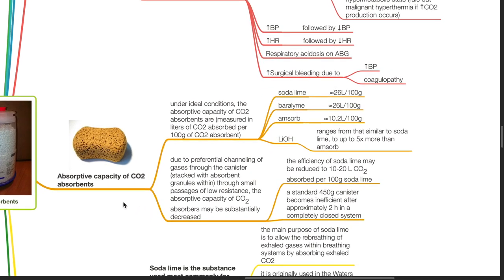Absorptive capacity of CO2 absorbent. Under ideal situations, absorptive capacity is measured in litres of CO2 per 100g of absorbent: soda lime 26 L/100g, baralime 26 L/100g, Amsorb 10.2 L/100g, lithium hydroxide ranging from similar to soda lime up to 5 times more than Amsorb. Due to preferential channeling of gases through the canister, the absorptive capacity may be substantially decreased. The efficiency of soda lime may be reduced to 10–20 litres per 100g. A standard 450g canister becomes inefficient after approximately 2 hours in a completely closed system.